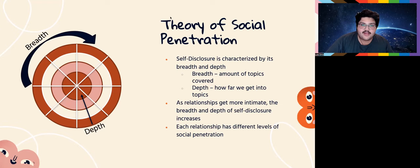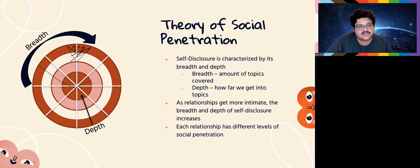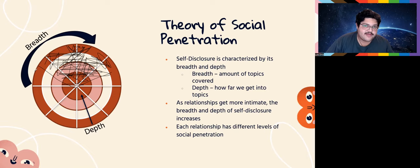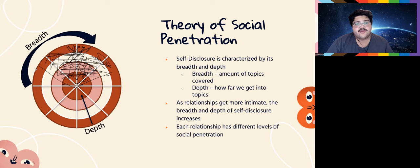Each relationship has different levels of social penetration. For example, you're not going to know me as much as you know your roommate — you spend more time with them, and your social penetration is much deeper with them than with me.